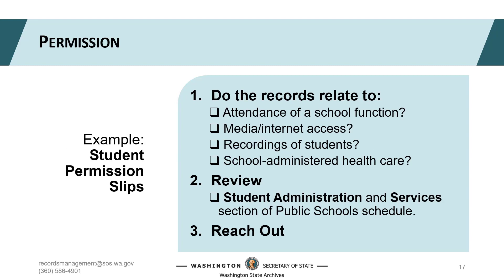For our first K-12 example, let's consider student permission slips. Because they're unique to schools, their retention is found in the public school's K-12 records retention schedule. There are many situations where permission is necessary when it comes to minors. Looking at the table of contents, you'll find student administration and student services — expect to find the permission DANs in these two sections. Use Control+F to search the schedule for the keyword 'permission,' and browse the subject index at the back with the same keyword. These strategies will get you close to the right record series; posing the questions about your record's context will help you pinpoint exactly where you need to be.